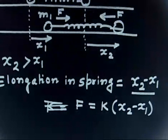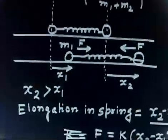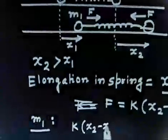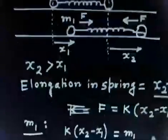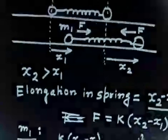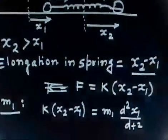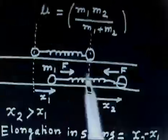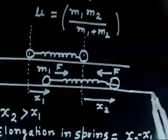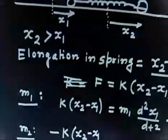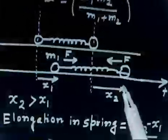Now let us write the equation of motion for particle 1. Force equals mass times acceleration: the force on m1 is k(x2 − x1), mass is m1, and the acceleration is d²x1/dt². This is equation number 1. For m2, the force is acting in the negative direction, so: −k(x2 − x1) = m2 × d²x2/dt².